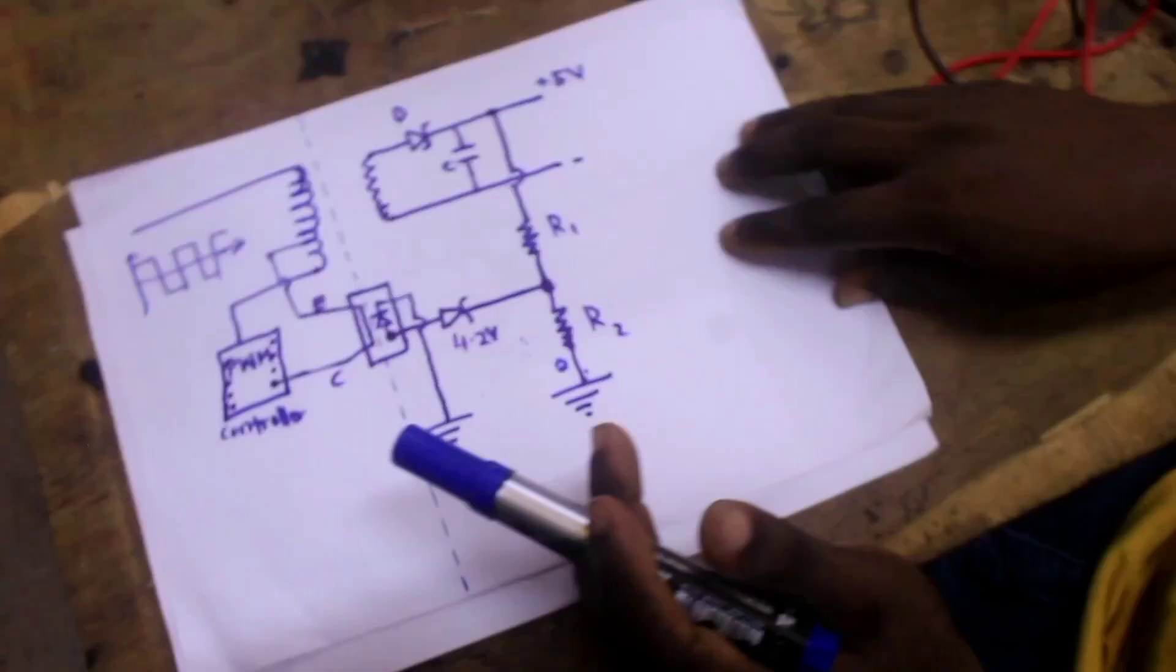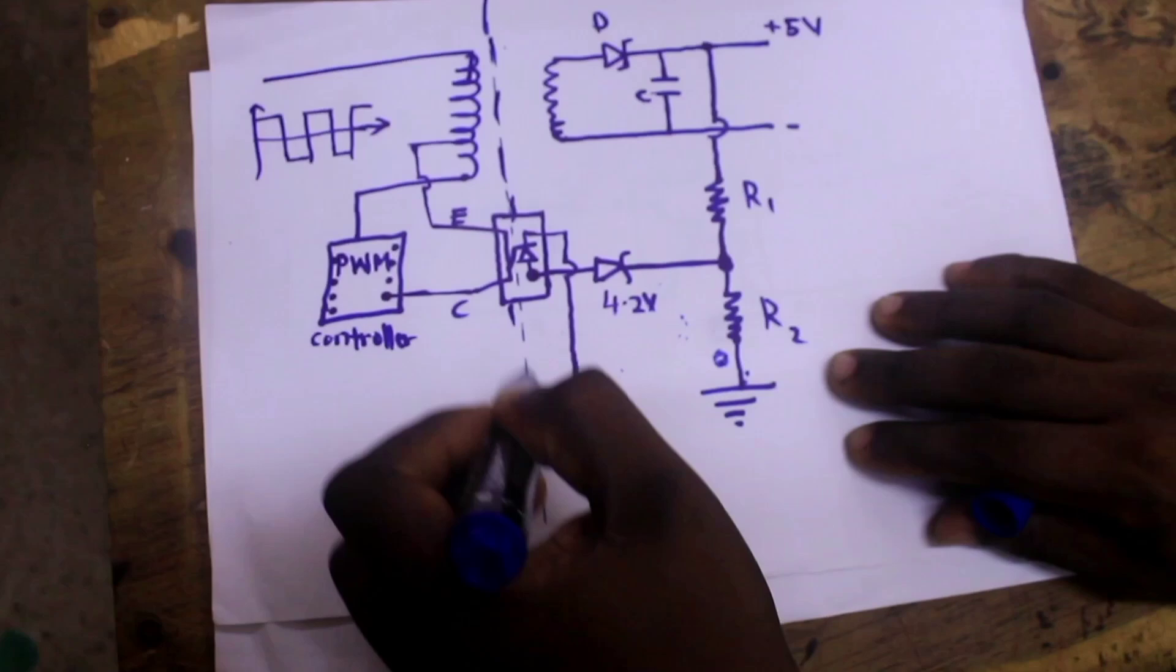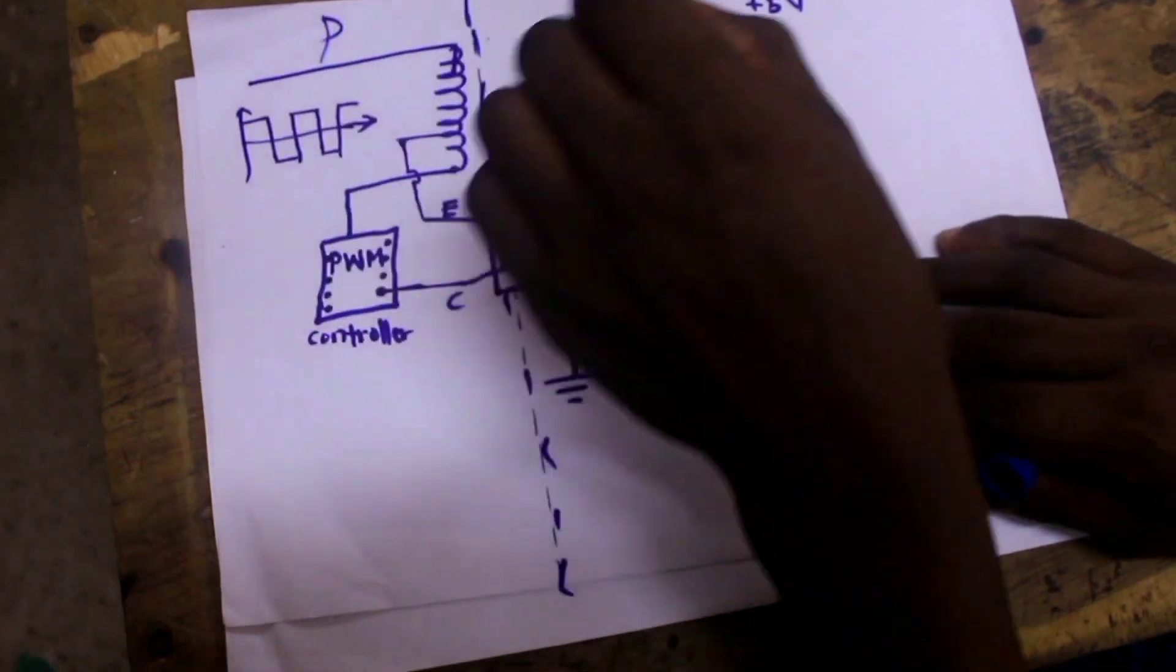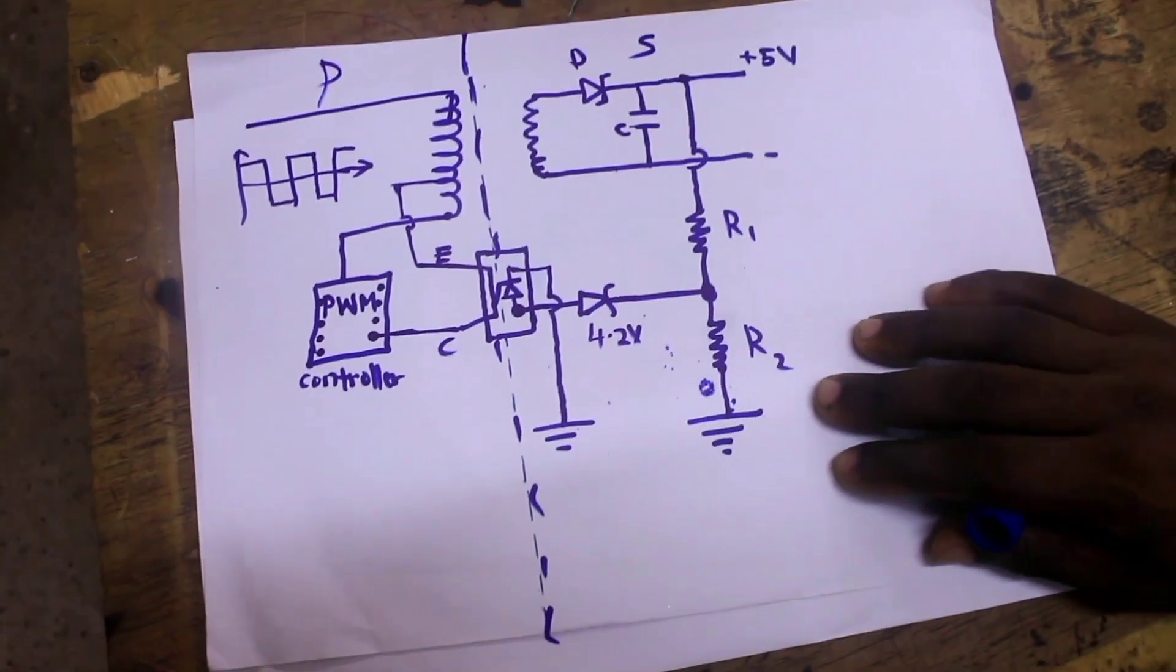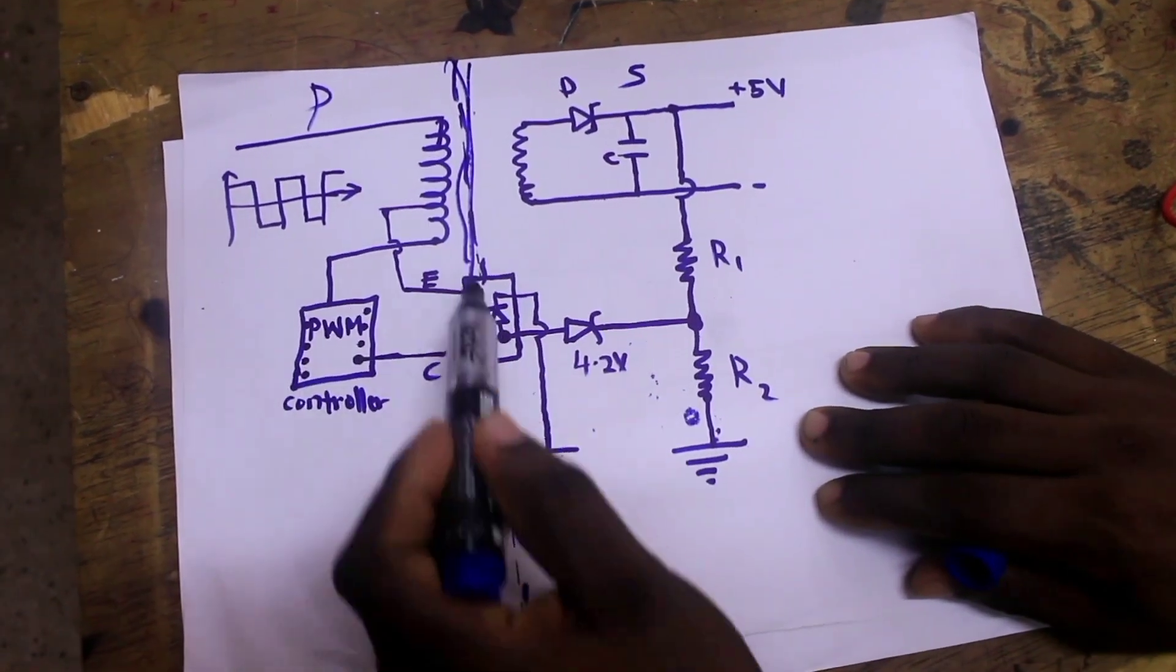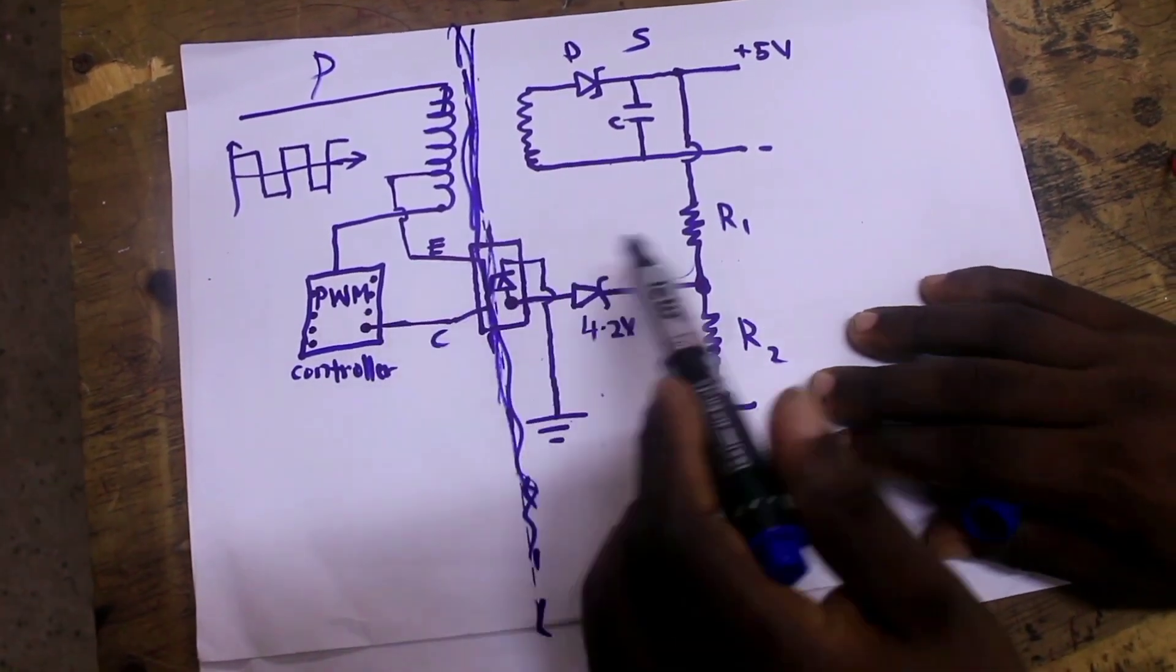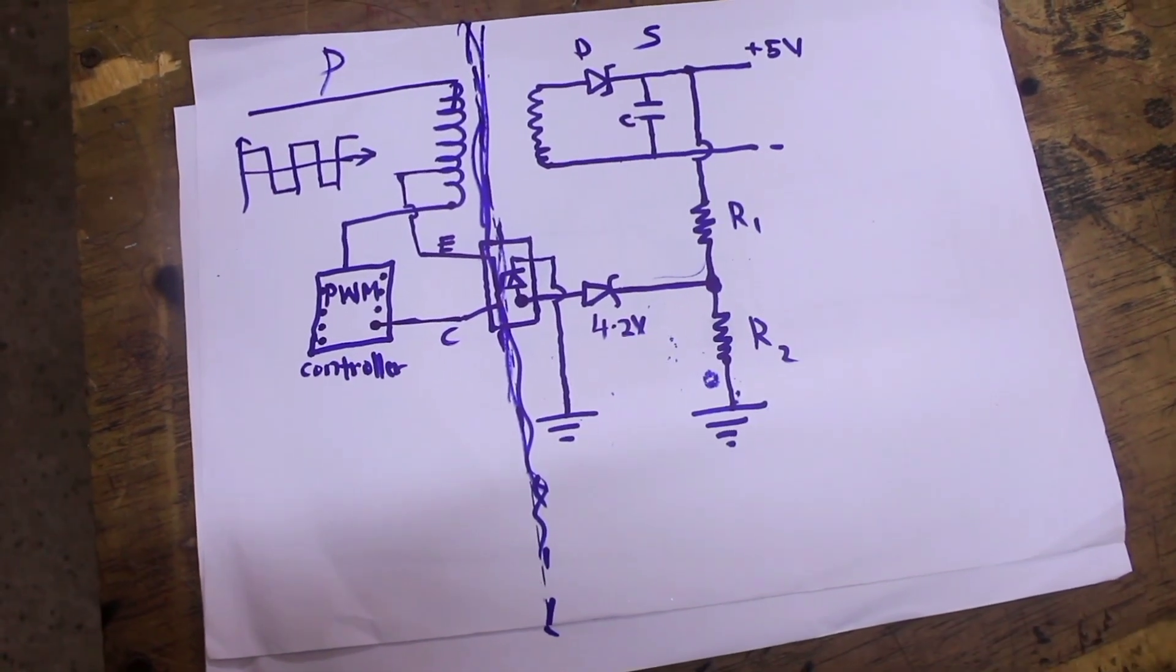So, this optocoupler is giving separation between the two sides of the power supply. There should be no connection between the primary side and the secondary side of the power supply, due to the huge power difference between the two sides. You can see the transformer is separating this side, and the optocoupler is separating the other side, so that the feedback does not feed directly to the primary side from the secondary side.